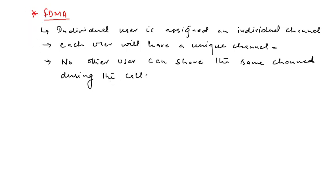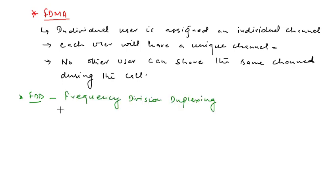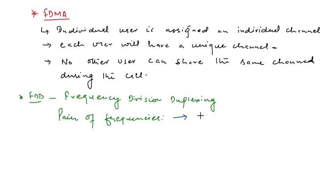In this FDMA system, there is a concept called FDD — Frequency Division Duplexing. An FDD system uses a pair of frequencies: one frequency is used for the forward channel while the other frequency is used for the reverse channel.